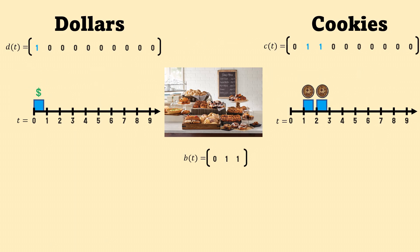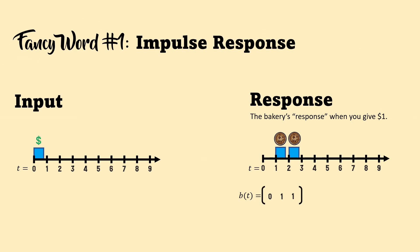Here we have a timeline that shows the number of days that pass. Here we have the function D of T, D for dollar, which tells us how many dollars we're giving to the bakery every single day. Here is the function C of T, C for cookies, which tells us how many cookies we receive every day. And here is the function B of T, B for bakery, which is the bakery's response to us paying one dollar. B of T is what we would call the impulse response of the bakery.